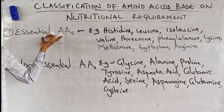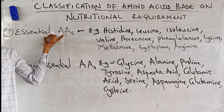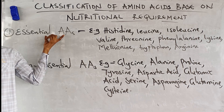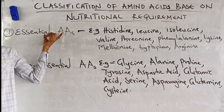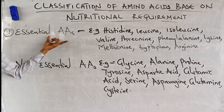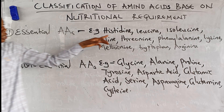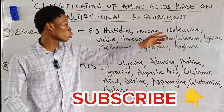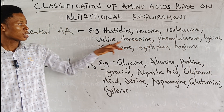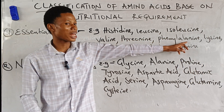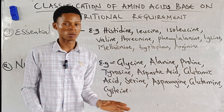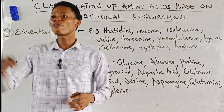Essential amino acids cannot be synthesized in the body, so it is essential that you get them from your diet. Examples of essential amino acids are: histidine, leucine, isoleucine, valine, threonine, phenylalanine, lysine, methionine, tryptophan, and arginine.